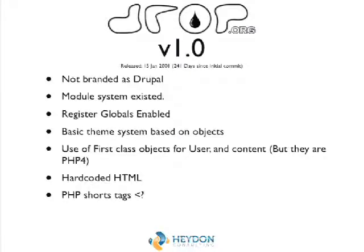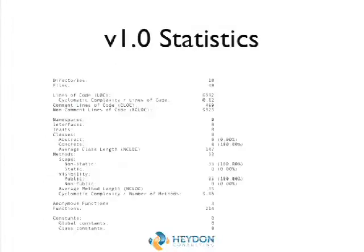There was lots of hard-coded HTML, real bad stuff — quite ugly. Like PHP, we used the short tags to invoke it. We got rid of the close tags a while ago, something a lot of WordPress still does. The statistics: 49 files and only 6,300 lines of code — fairly small but did quite a lot.